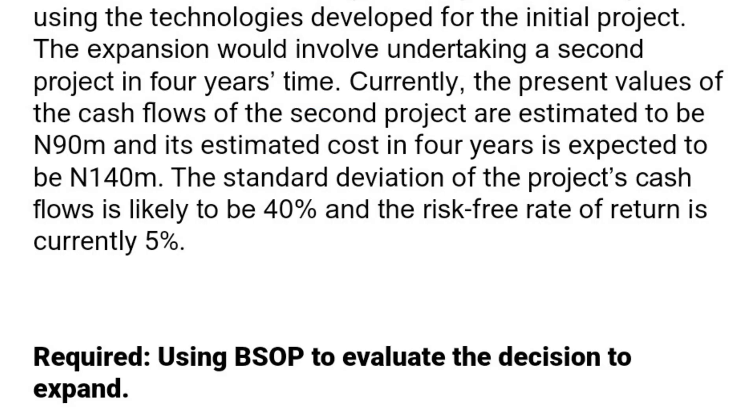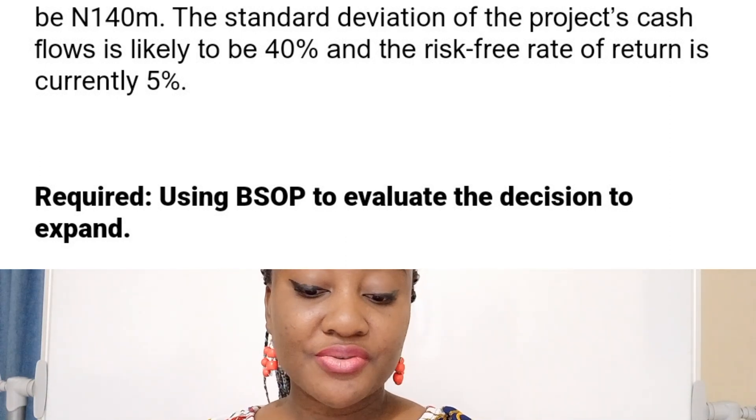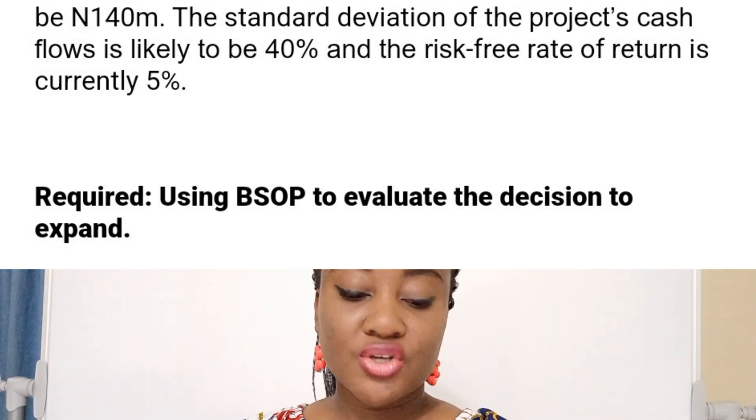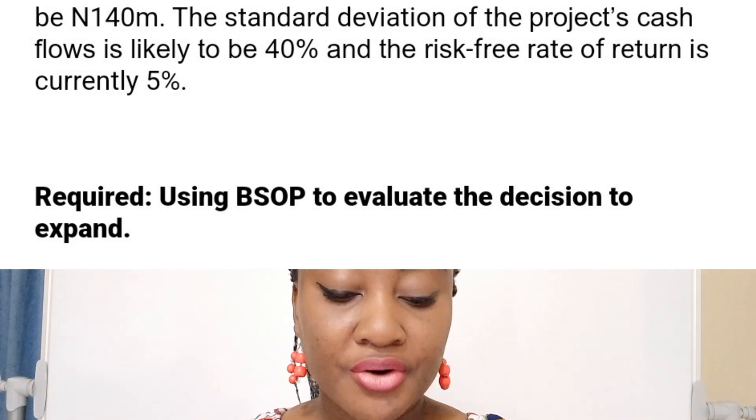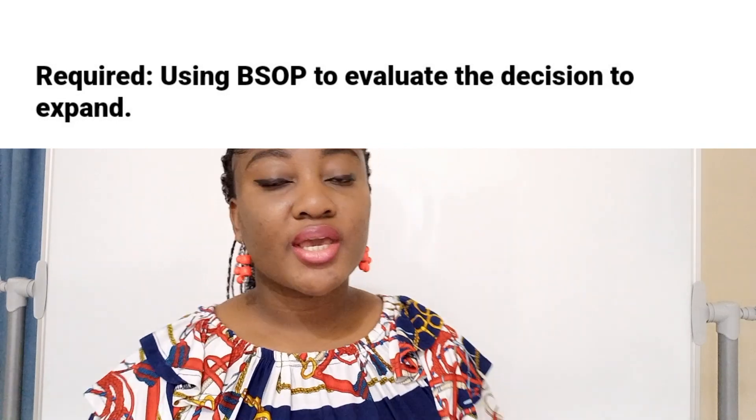Currently, the present values of the cash flows of the second project are estimated to be $90 million, and its estimated cost in four years is expected to be $140 million. The standard deviation of the project's cash flow is likely to be 40%, and the risk-free rate of return is currently 5%. Required: use BSOP to evaluate the decision to expand.